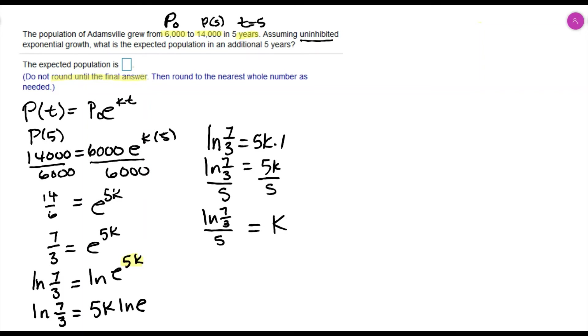We've been able to find our growth rate, and now we can modify our formula to be specific for this problem. We know that P naught was 6,000, that's our initial population, and we know the growth rate now is natural log of seven-thirds over five. So now at any moment of time, I can find the population.